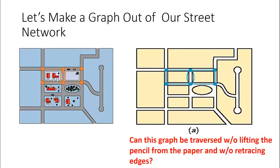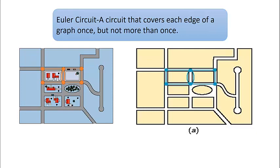What we actually are trying to find is something called an Euler circuit. An Euler circuit is a circuit that covers each edge of a graph once, but not more than once. The fact that it's a circuit means that it must start and stop at the same vertex. To be an Euler circuit, we want to cover every edge exactly once.